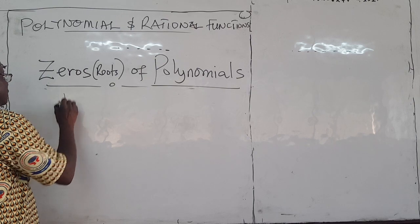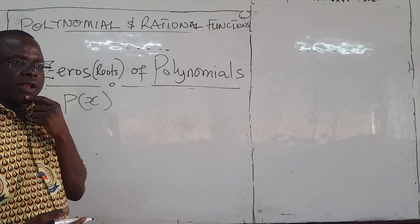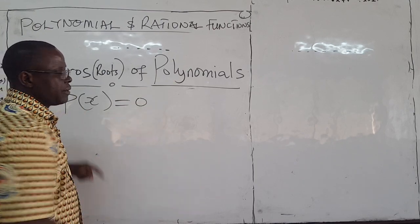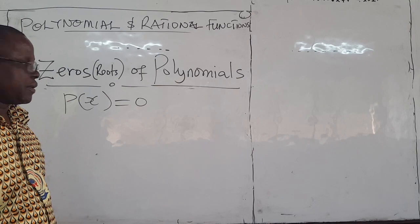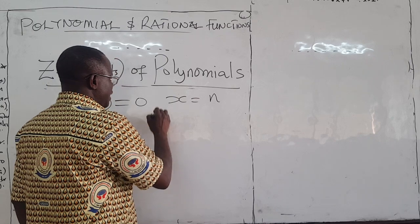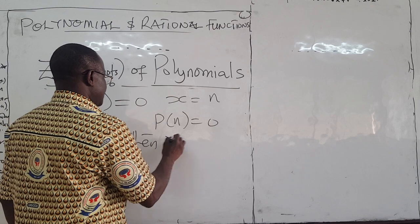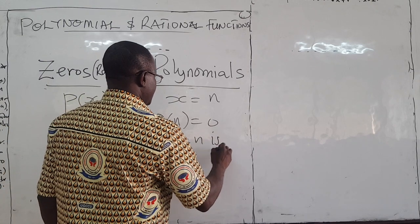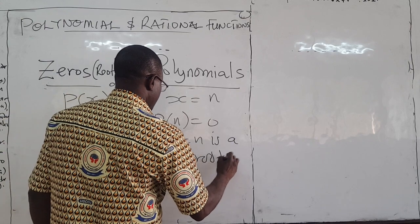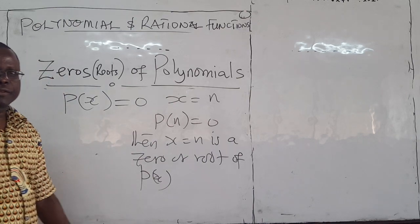Given a polynomial P of x, all the values of x that would cause this to go to zero are called the zeros of the polynomial. So if x is equal to n such that P of n is zero, then x equals n is a zero or root of the polynomial P of x.